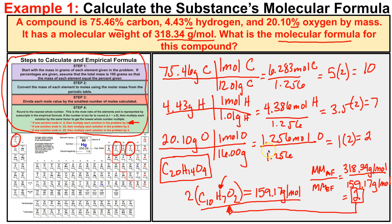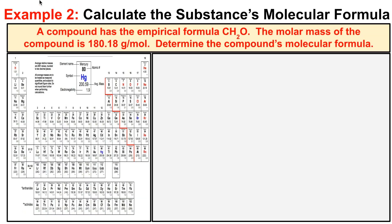Let's take a look at another example — one in which the empirical formula is already given, so you don't need to do all those earlier steps. In example 2, a compound has the empirical formula CH2O. The molar mass of the compound is 180.18 grams per mole. We need to determine the compound's molecular formula. Since the empirical formula is already given as CH2O, this is a much easier problem.